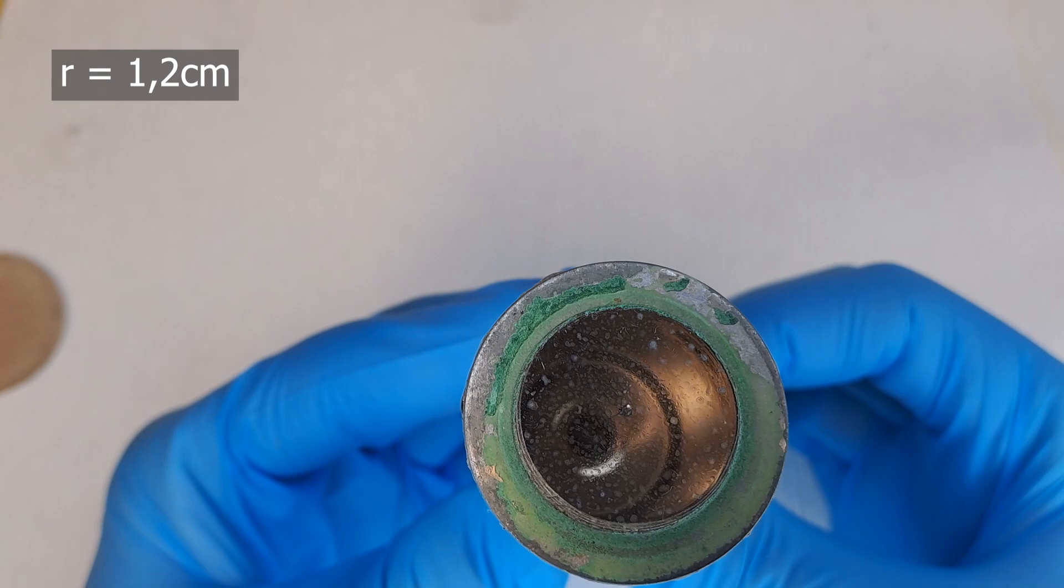How big is our detector? It has an area of pi times r squared, which is 4.52 centimeters squared, with a radius of r equals 1.2 centimeters.